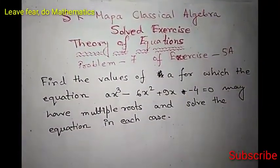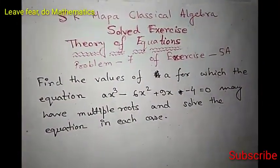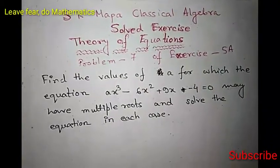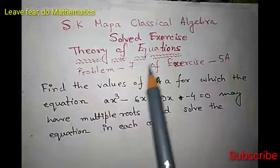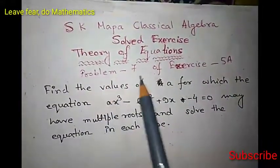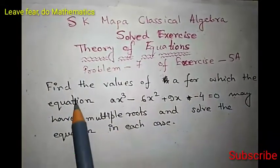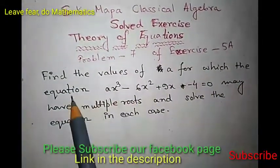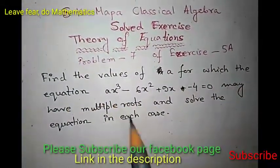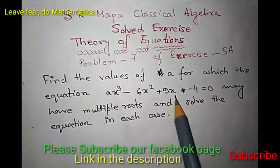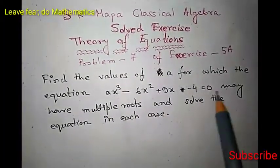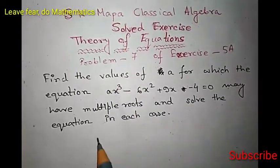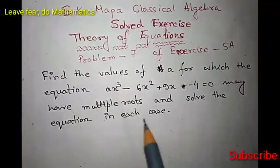Hello Friends, welcome to Libre2Mathematics. Today we are going to solve another problem from Eskimapa Classical Algebra, Chapter Theory of Equations, Problem 7 of Chapter 5. The problem says: find the values of A for which the equation A x cubed minus 6 x squared plus 9 x minus 4 equals 0 may have multiple roots, and solve the equation in each case.